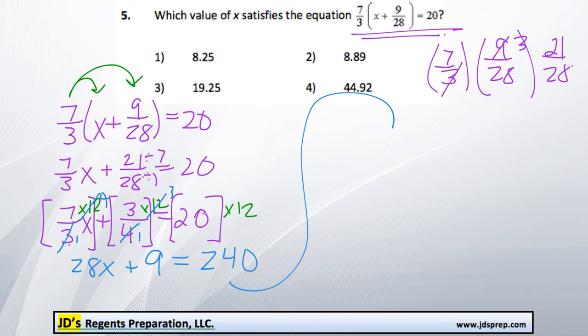Moving on up here. So we've got 28x plus 9 equals 240. Next,